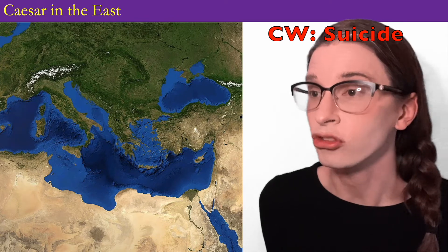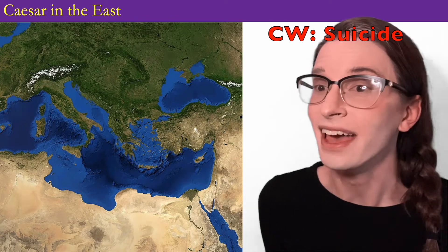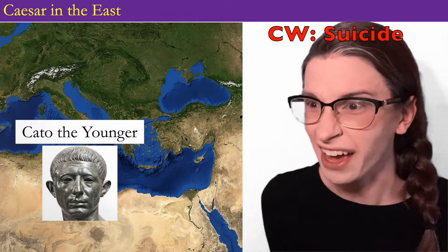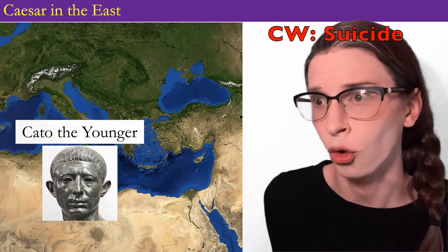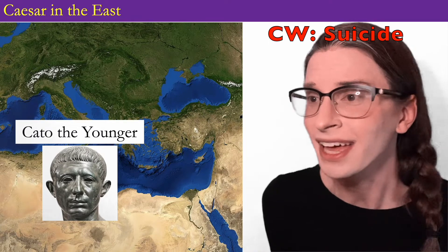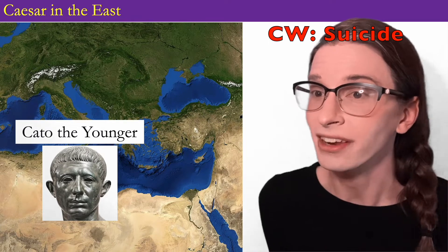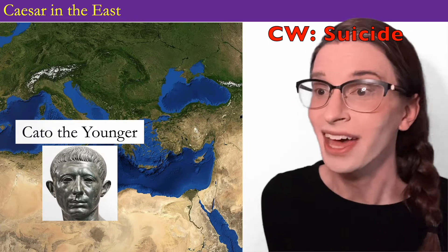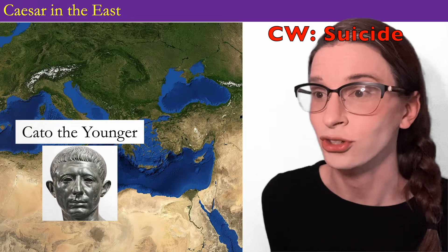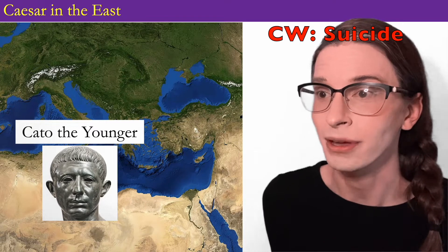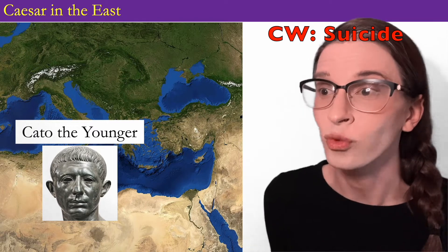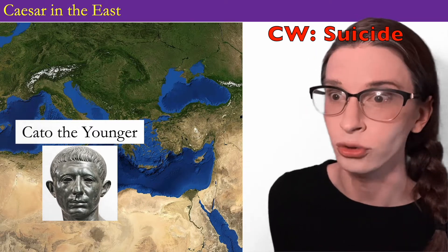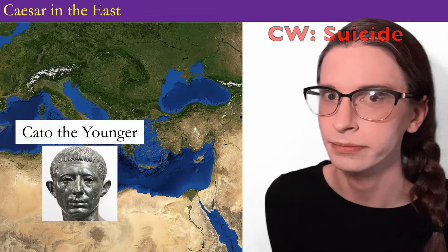The famous story is that Cato the Younger runs himself through with a sword, which is actually a very slow way to die. Caesar is coming to see Cato to extend his mercy, and some doctors start to stitch him up — but Cato rips out his intestines with his own hands to undo their work.